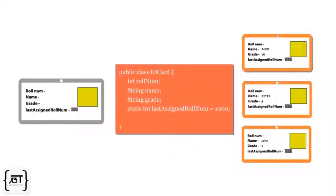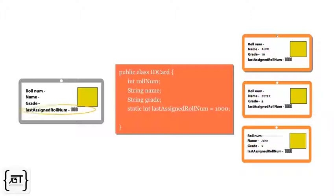Each object of ID card has its own copy of the role number, name, and grade variables. But there is only a single copy of the last assigned role number variable.